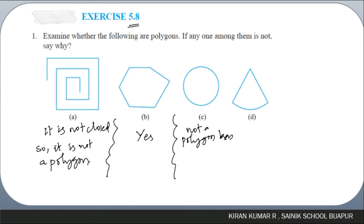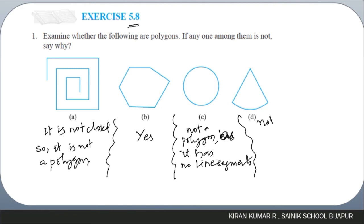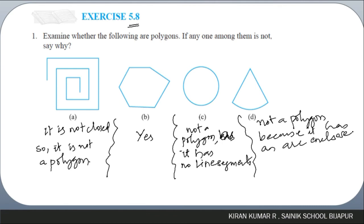Option C is not a polygon as it has no line segments. The fourth figure is also not a polygon because it has an arc enclosed with line segments. A polygon must be made up entirely of line segments, not curves.